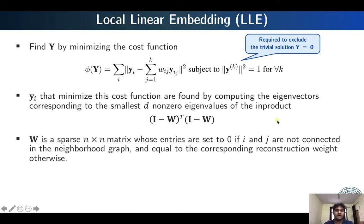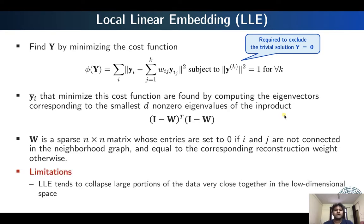W is a sparse matrix because data points connected in the neighborhood graph have reconstruction weights as entries, while entries for non-connected pairs are set to zero. This is how Local Linear Embedding works. Similar to isomap, it has limitations — it can fail if the manifold has holes, and it also tends to collapse large portions of the data very close together in the lower-dimensional space, leading to rescaling issues arising from the simplified covariance constraint used to exclude the trivial solution.